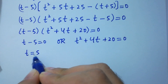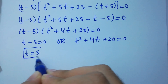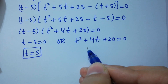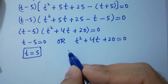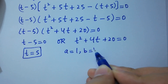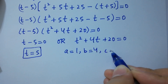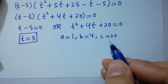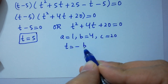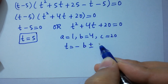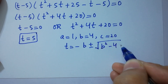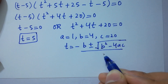Either t minus 5 equals 0, giving t equals 5, which is our first real solution. Or t squared plus 4t plus 20 equals 0, which is our quadratic equation, where a equals 1, b equals 4, and c equals 20. We apply the quadratic formula: t equals minus b plus or minus square root of b squared minus 4ac, over 2a.